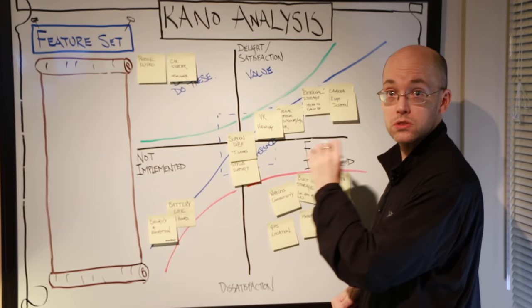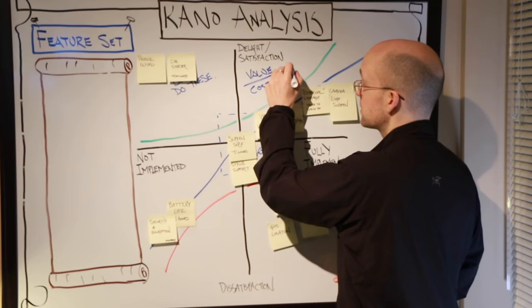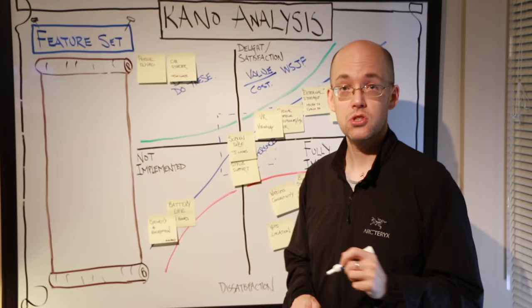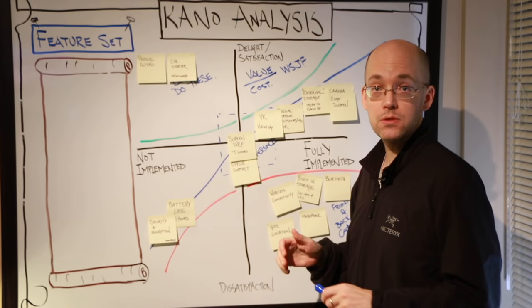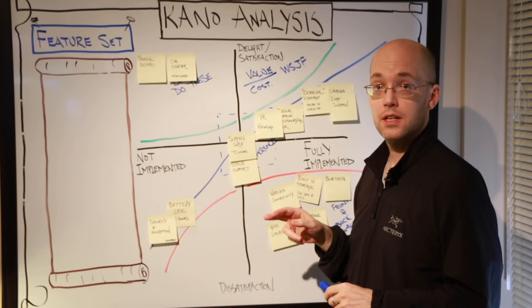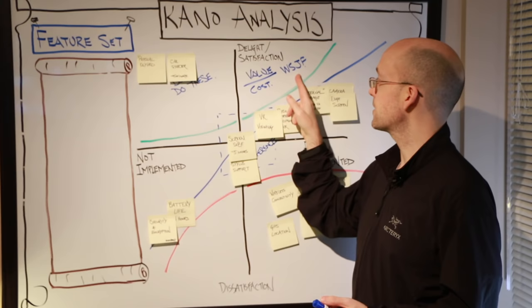And you get something WSJF, which stands for weighted shortest job first. As long as the risk of this is about the same of doing the implementation, then you'll find that if you do this quotient, then you prioritize based on the highest number that the WSJF gives, or when you divide these out.